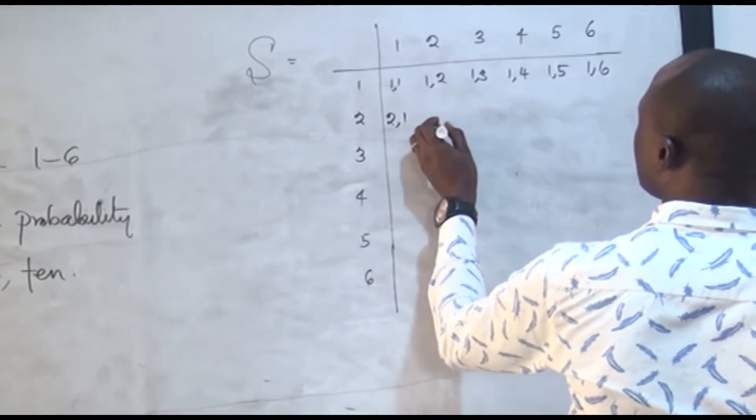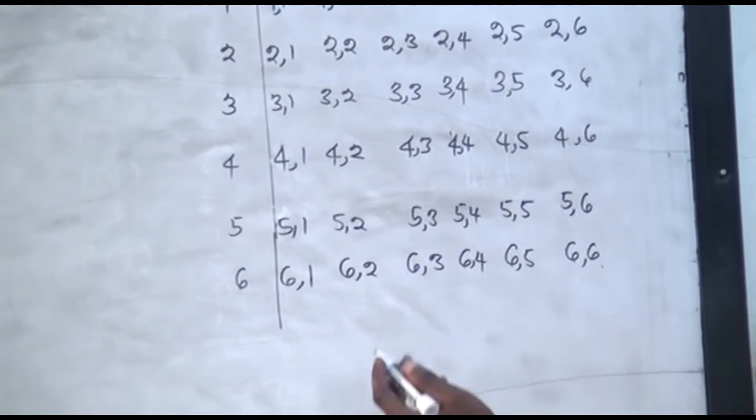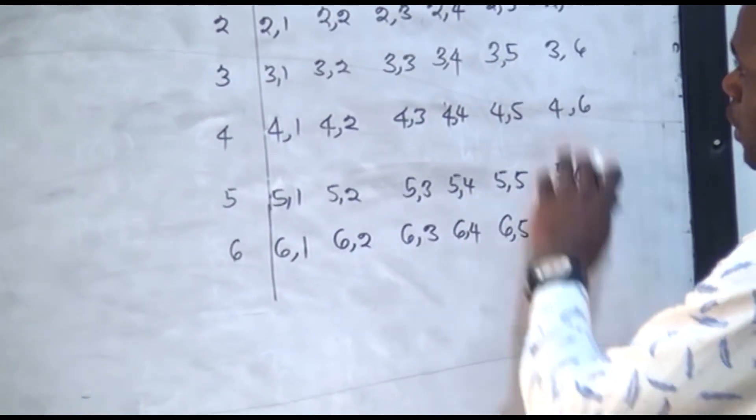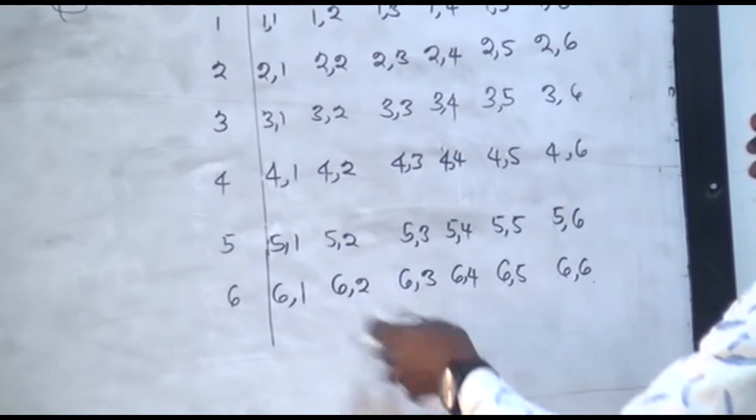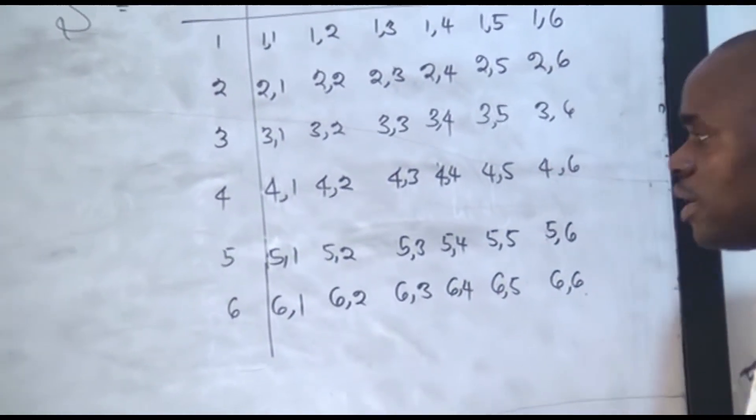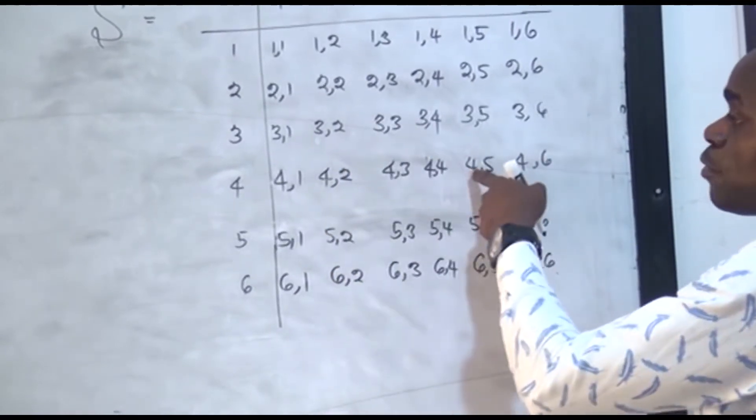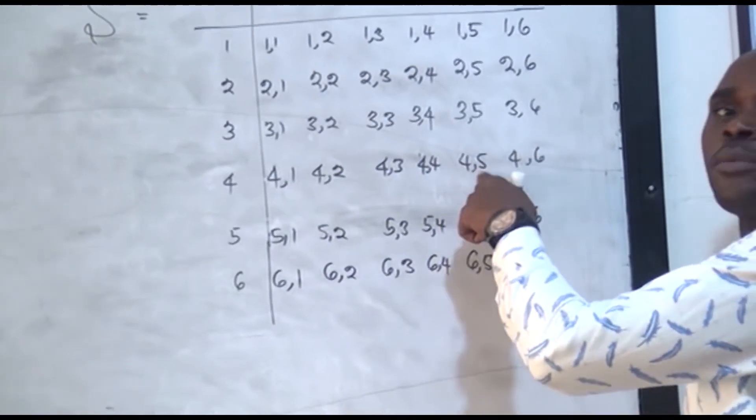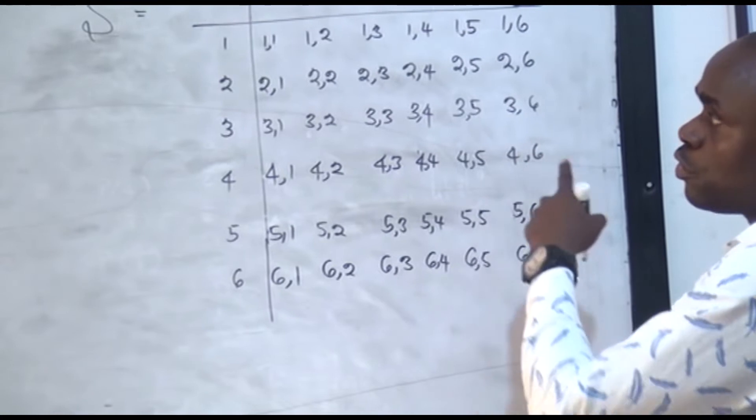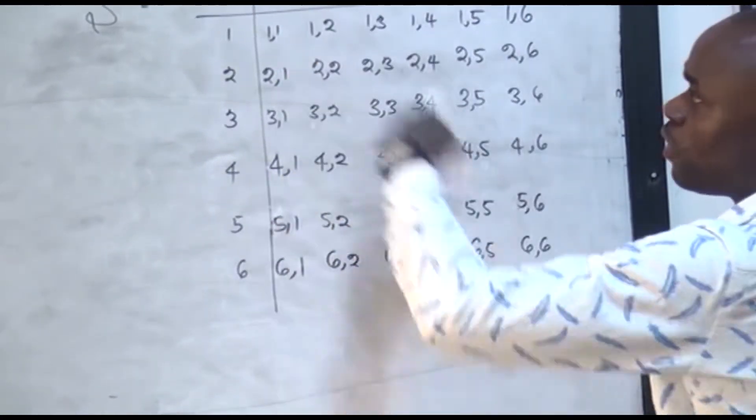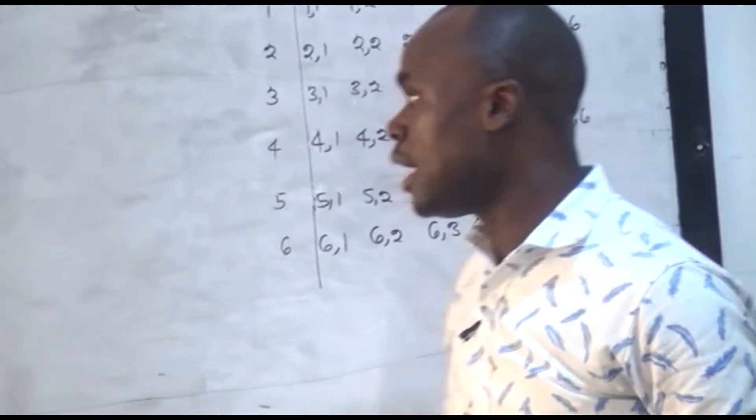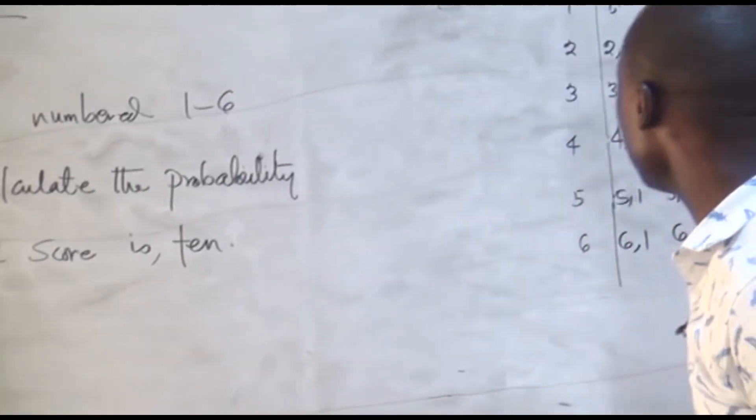Then 2,1. So this is the sample space. All the possibilities of tossing this die twice is what you have here. It's possible for you to have 3 the first time and 2 the second time. It's possible for the first throw to be 4 and the second time 5. So now this is what we refer to as a sample space, very important.